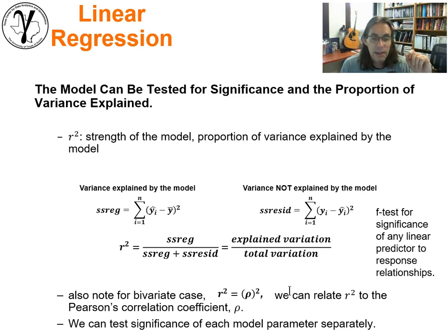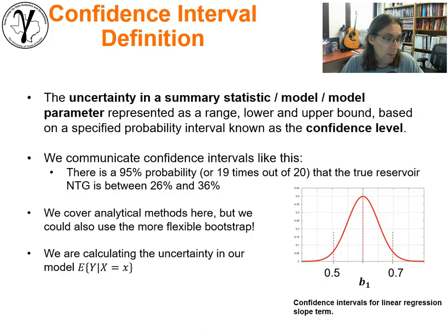We can test the significance. By looking at the explained variation versus the total variation, we can pose an F-test to test for the significance of any of the linear predictors. We can also perform t-tests in order to test the significance of each one of the model parameters. Are b1 and b0 significantly different than zero?